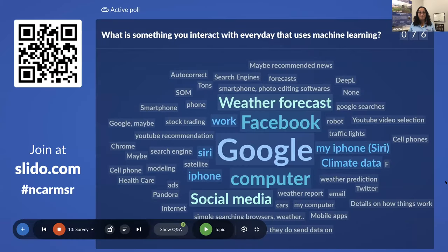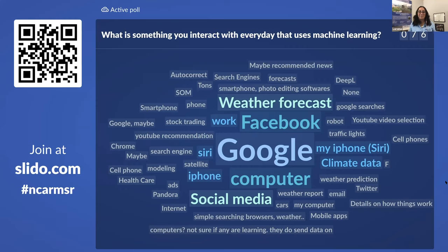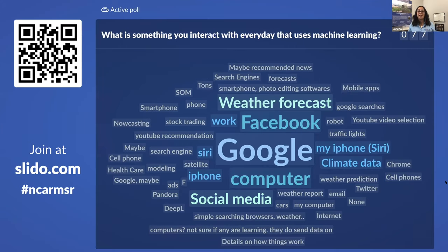One of the questions from our word cloud: in your everyday life, what are some things that use machine learning? Google is the biggest one. We have satellites, modeling, cell phones, iPhone, weather prediction — which is some of the things we'll be talking about today. Maybe recommended news. So how is all of this machine learning interacting in our lives? Cars are also one, and deep learning. With that, I'd like to welcome Dr. David John Gagne for your talk today. We will be taking questions at the end of the lecture.